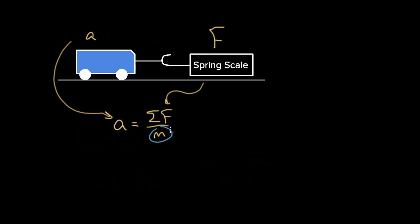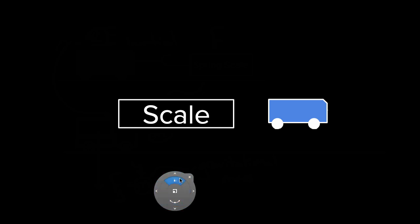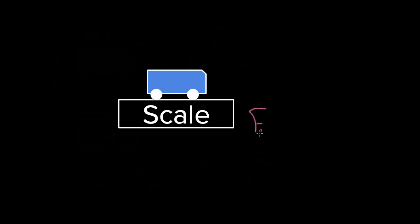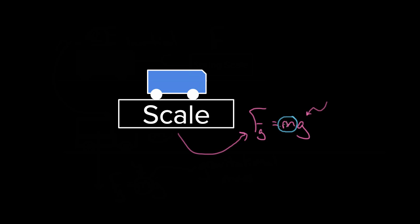How would you experimentally determine the gravitational mass of the cart? It's even easier. All you have to do is take a digital scale, put your cart on it, and measure how much the scale reads, because the force of gravity is what the scale measures. It's telling you how much weight this object has. And if you know what planet you're on, you know g — so if g is 9.8 and you solve for m in Fg = mg, you've solved for the gravitational mass. So whenever you weigh something on a scale and get m, you're getting gravitational mass. If you use Newton's second law, you're getting inertial mass.